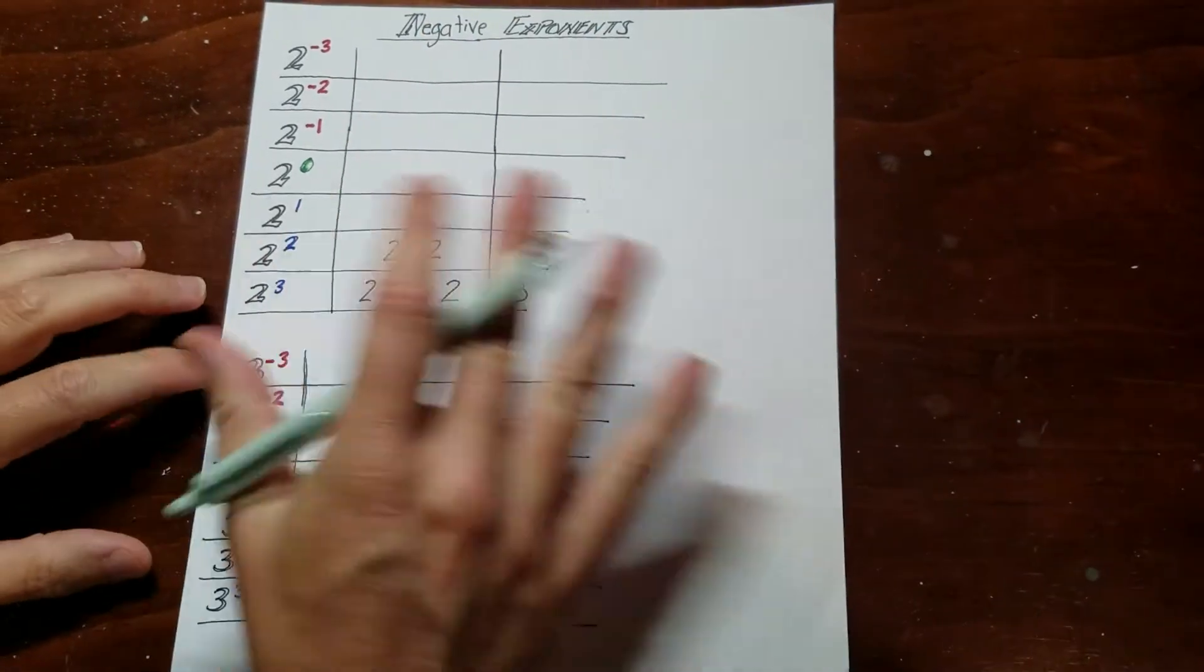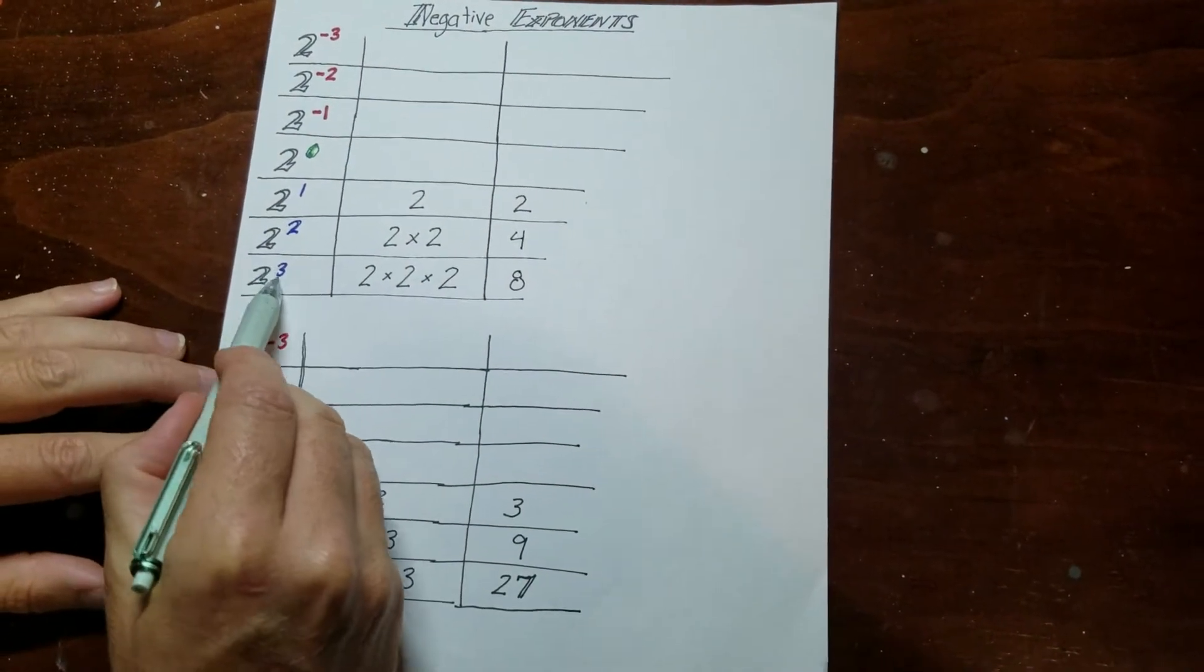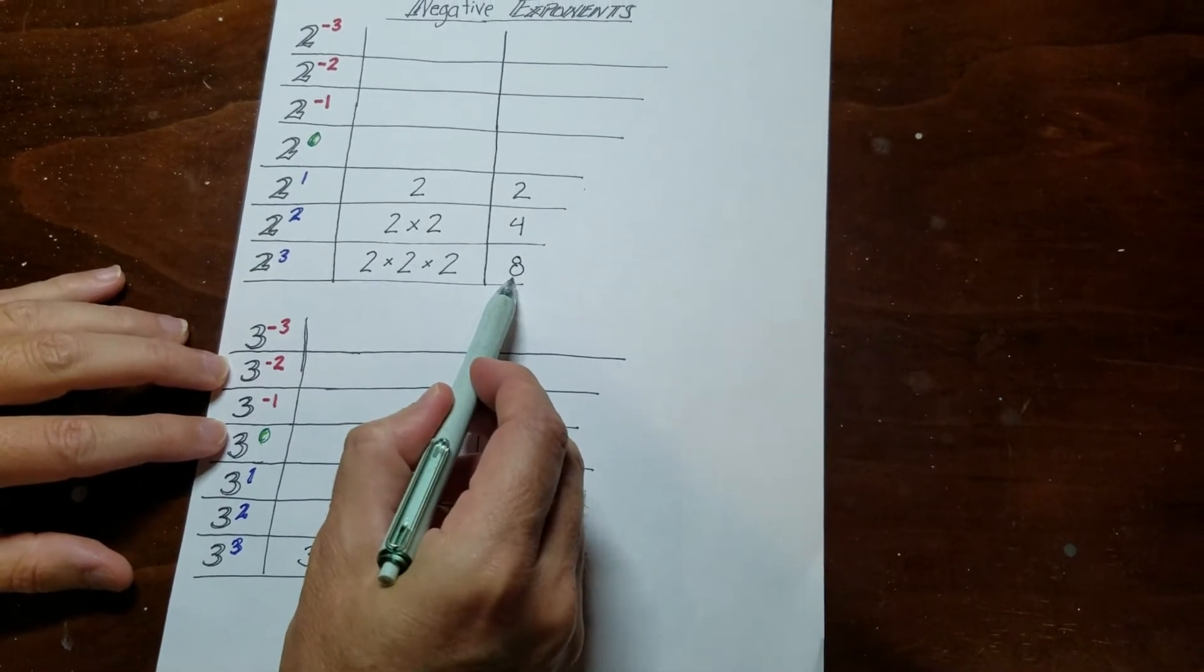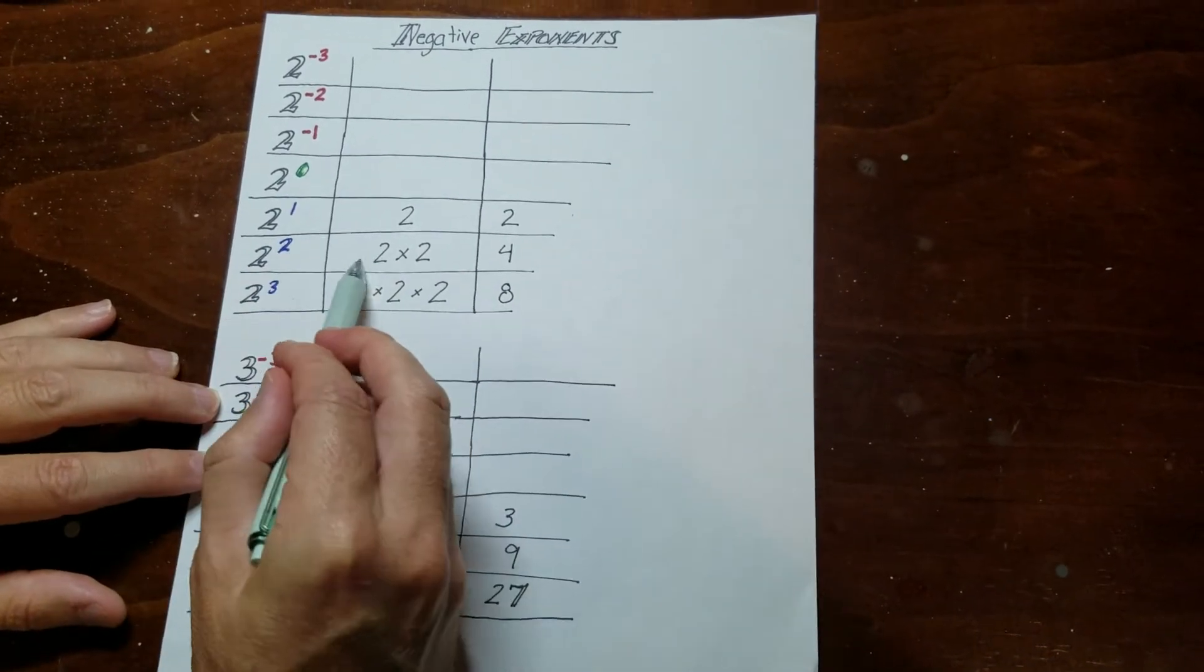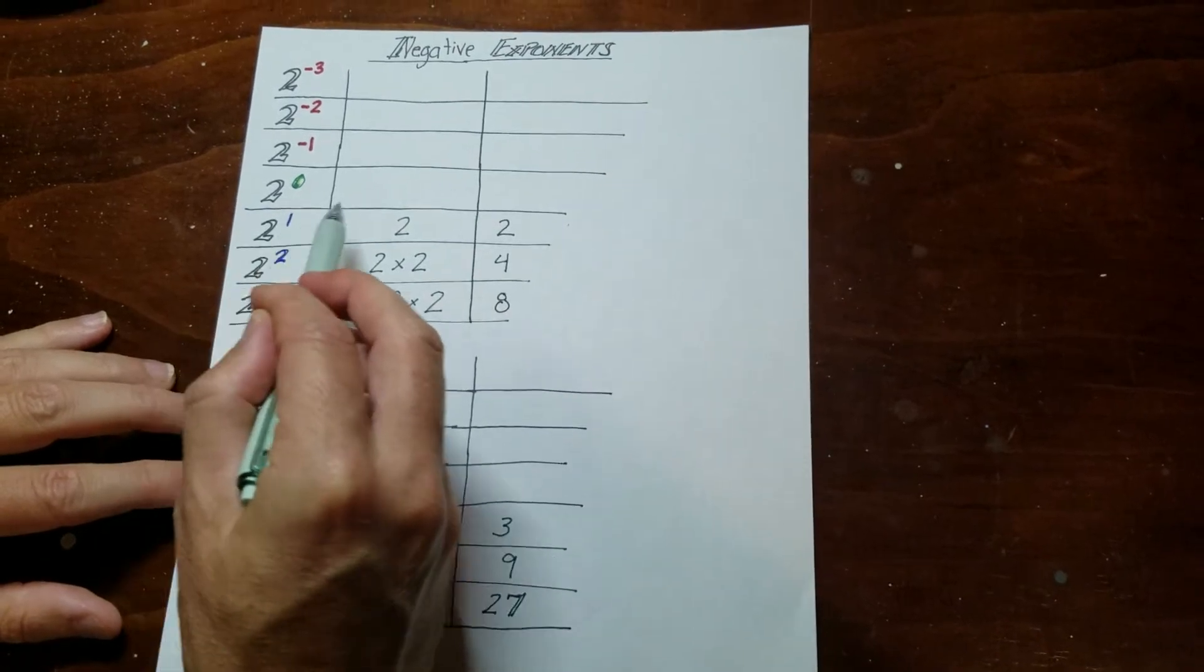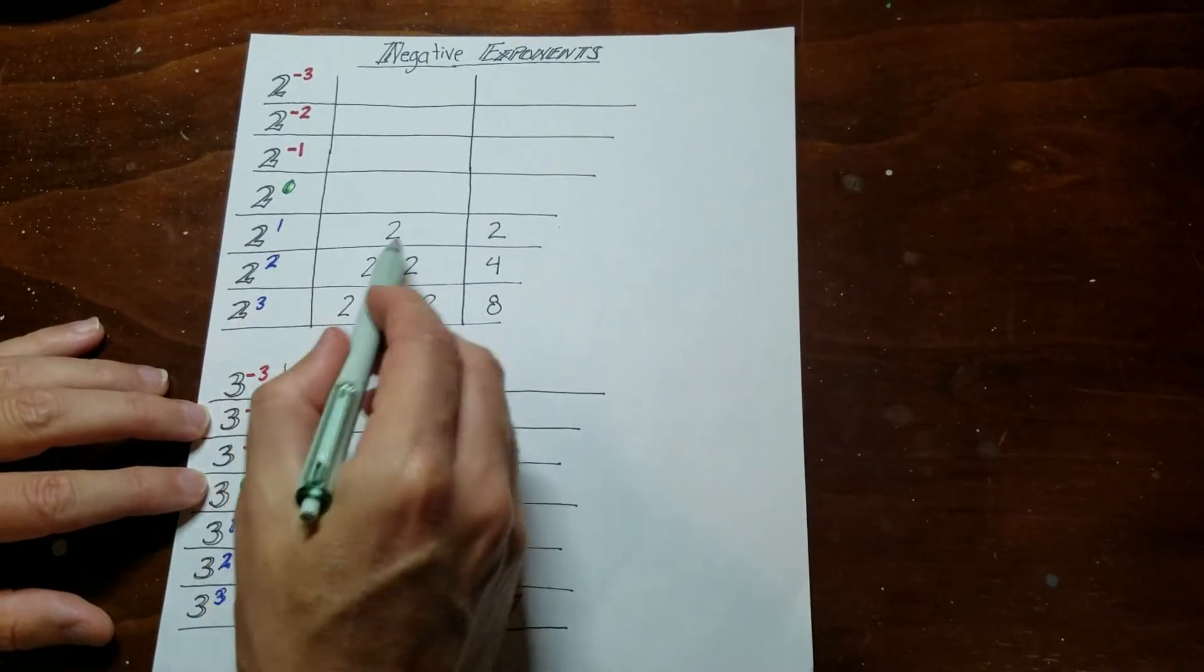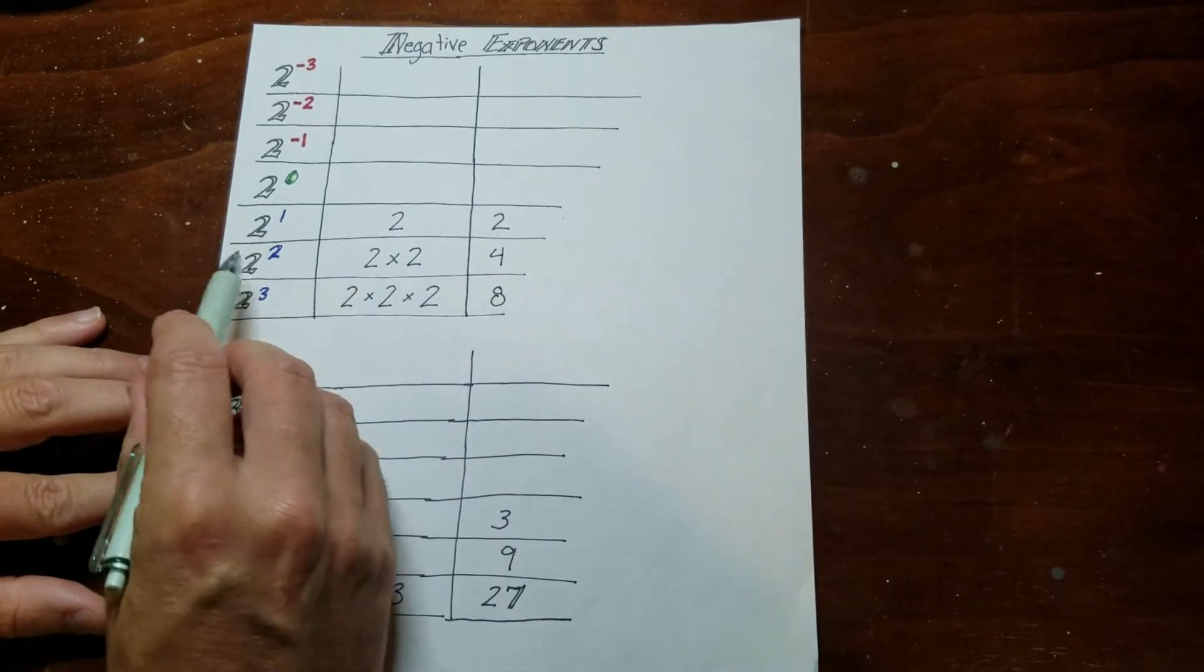So what I did here is I made a little chart. You can see 2 to the power of 3 means 2 times 2 times 2, which has a value of 8. 2 to the power of 2 is 2 times 2, which has the power of 4. 2 to the power of 1 is 2, which has the value of 2. So everything you see here, nothing surprising, there should be nothing new.